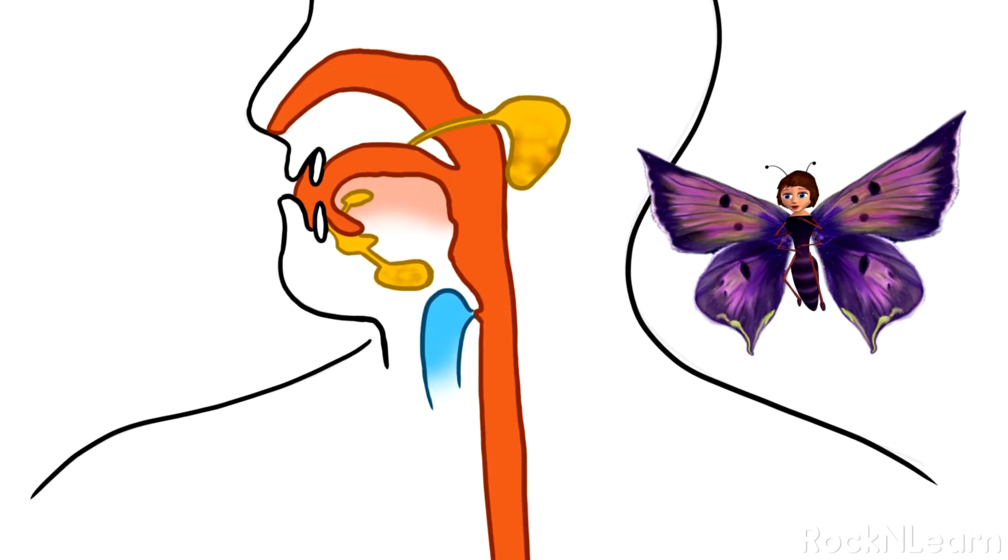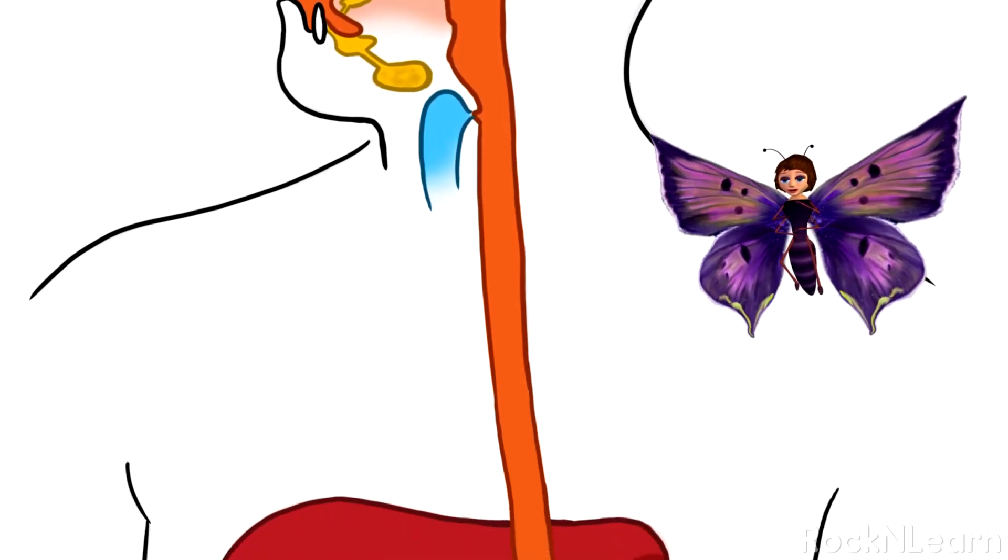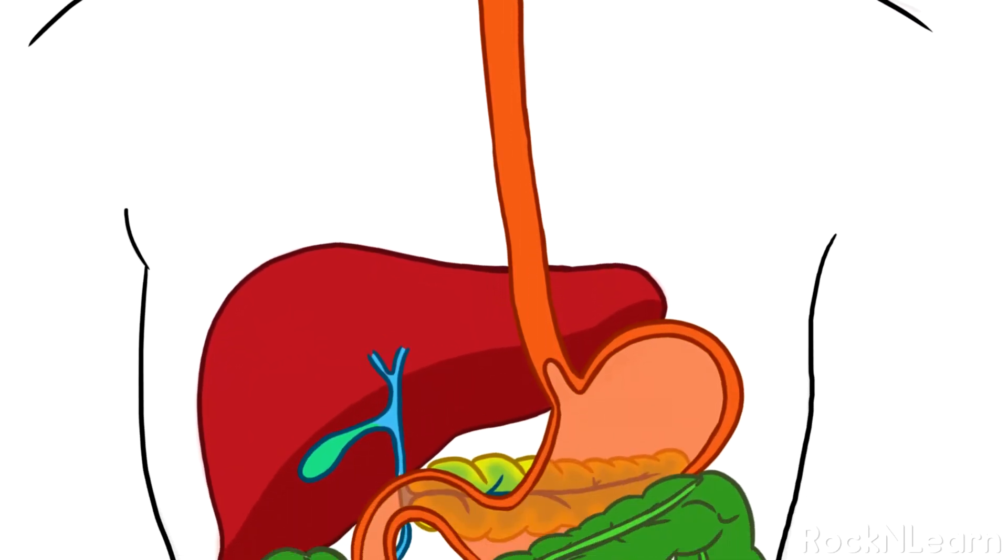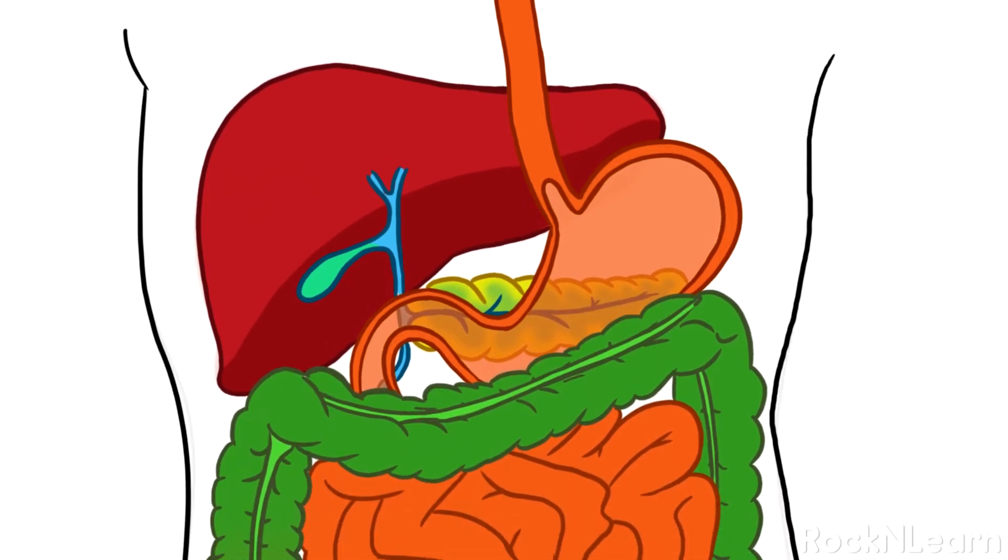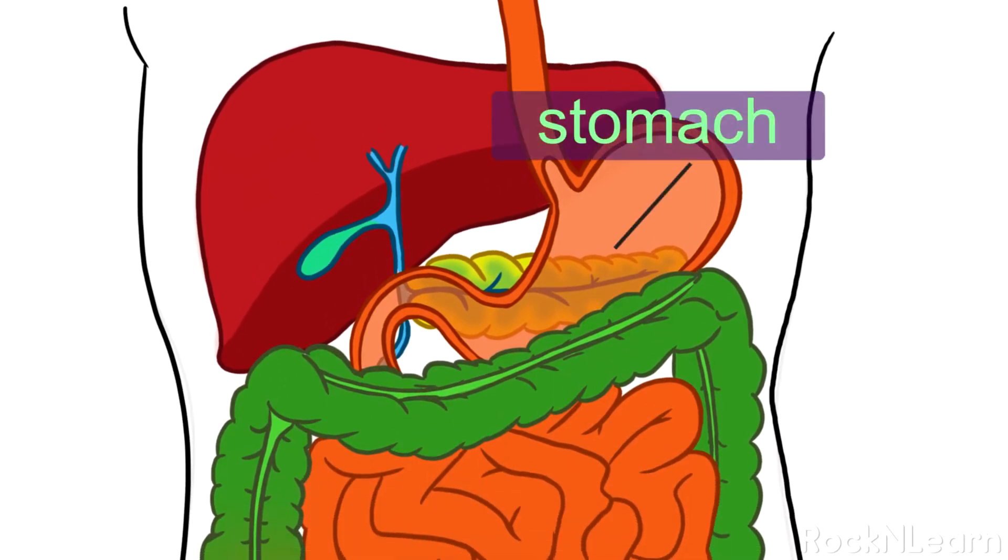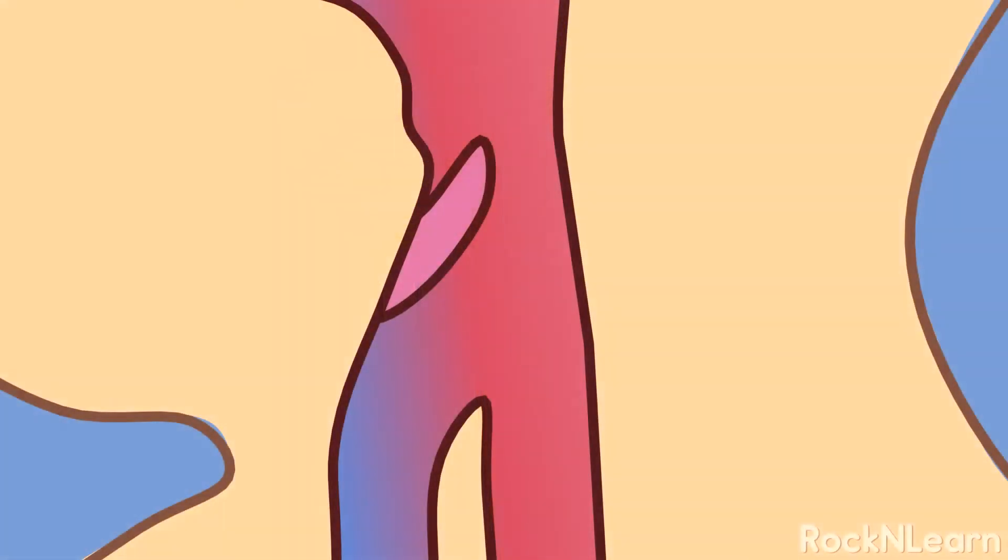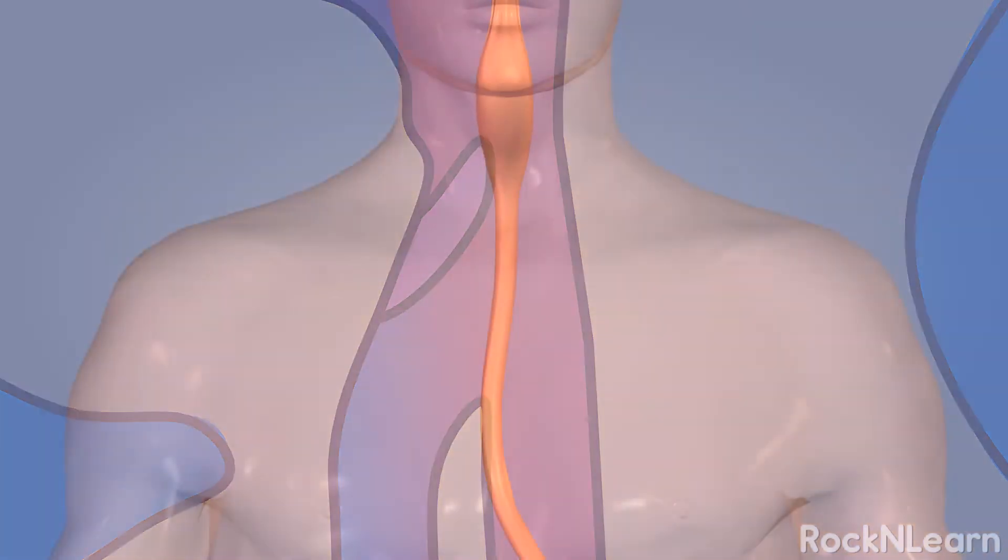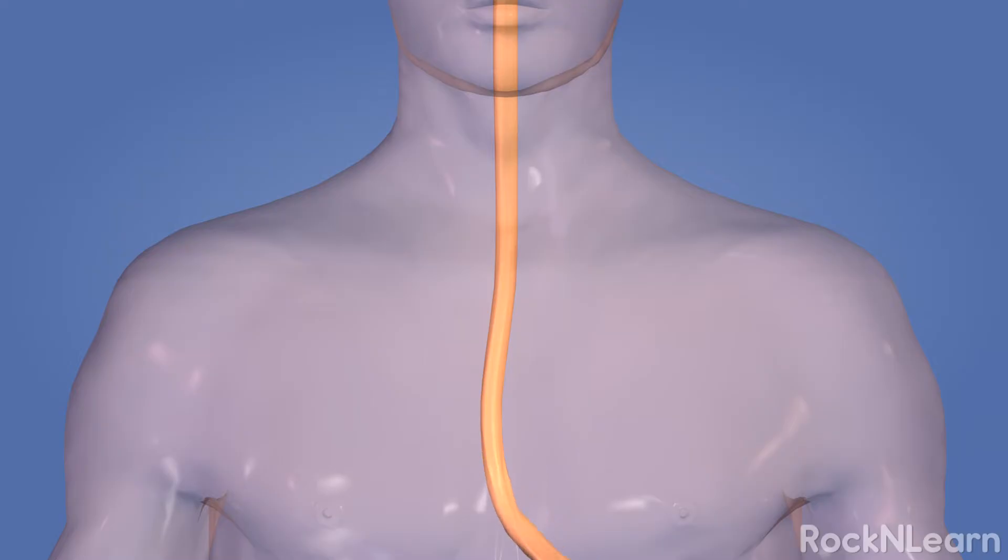The esophagus is a stretchy pipe that's about 10 inches long. It moves food from the back of your throat to your stomach. When you swallow, a special flap called the epiglottis flops down over the opening of your windpipe to make sure the food enters the esophagus and not the windpipe. Muscles in the walls of the esophagus move in a wavy motion to slowly squeeze the food through. This takes about 2 or 3 seconds.